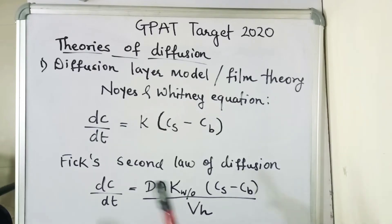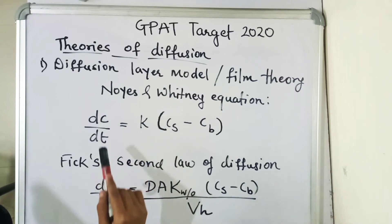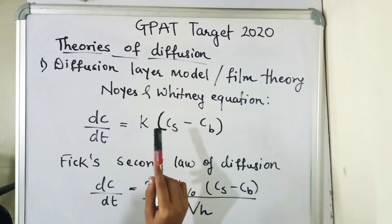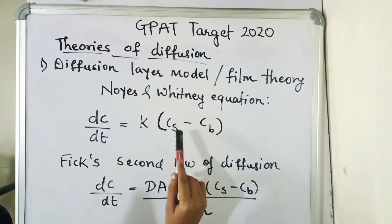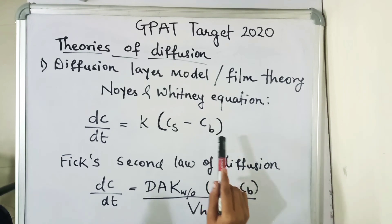The rate of dissolution was given by Noyes and Whitney equation, which is dc/dt equals k times (cs minus cb), where dc/dt is the dissolution rate of the drug, k is the dissolution rate constant, cs is the concentration of drug in the stagnant layer, also known as saturation layer or maximum drug solubility, and cb is the concentration of drug in the bulk solution.